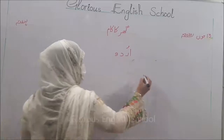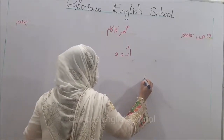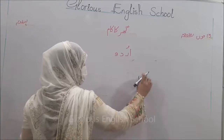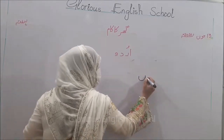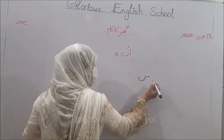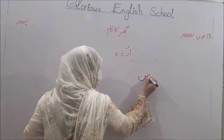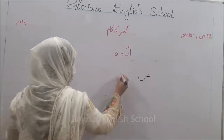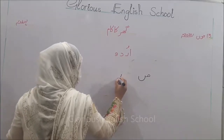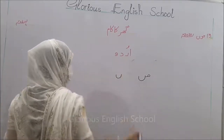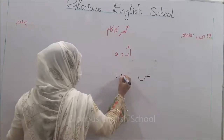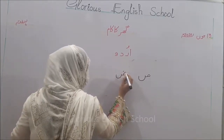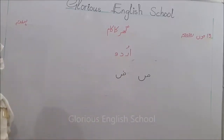اردو - آج ہم سواد سے دوبارہ لکھیں گے۔ Swad बनाएंगे - नीचे से गोल करेंगे, छोटी सी लाइन इधर लिखाएंगे और ऊपर से गोल कर देंगे तो यह बन जाएगा स्वाद। गोल, सीधी लाइन, ऊपर से गोल और एक नुक्ता - Swad, Zwad।